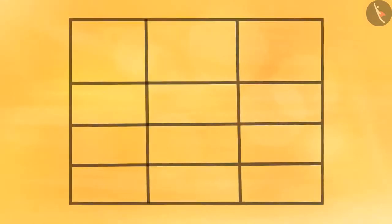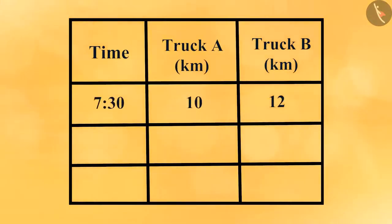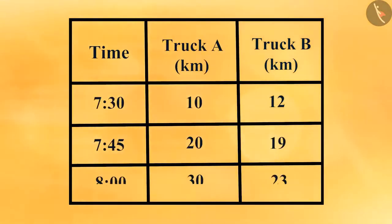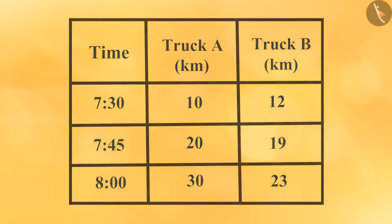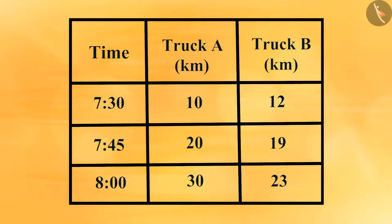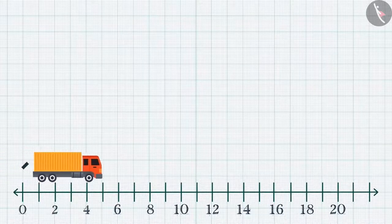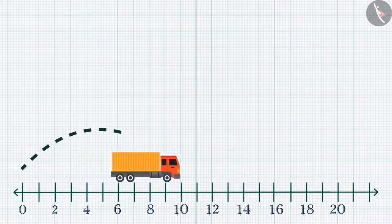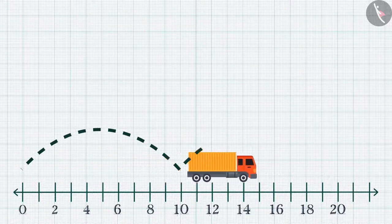Here is a table showing time-distance data of two trucks, truck A and truck B. Truck A's motion is uniform because it covers the same distance — 10 kilometers — in each 15-minute interval.